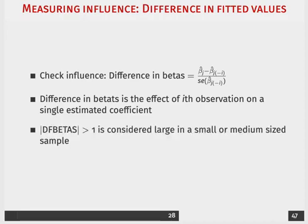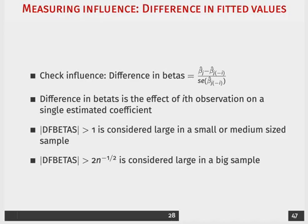Therefore, if the absolute value of the difference in betas is larger than one, we'll consider that to be large difference if we have a small or a medium-sized sample.